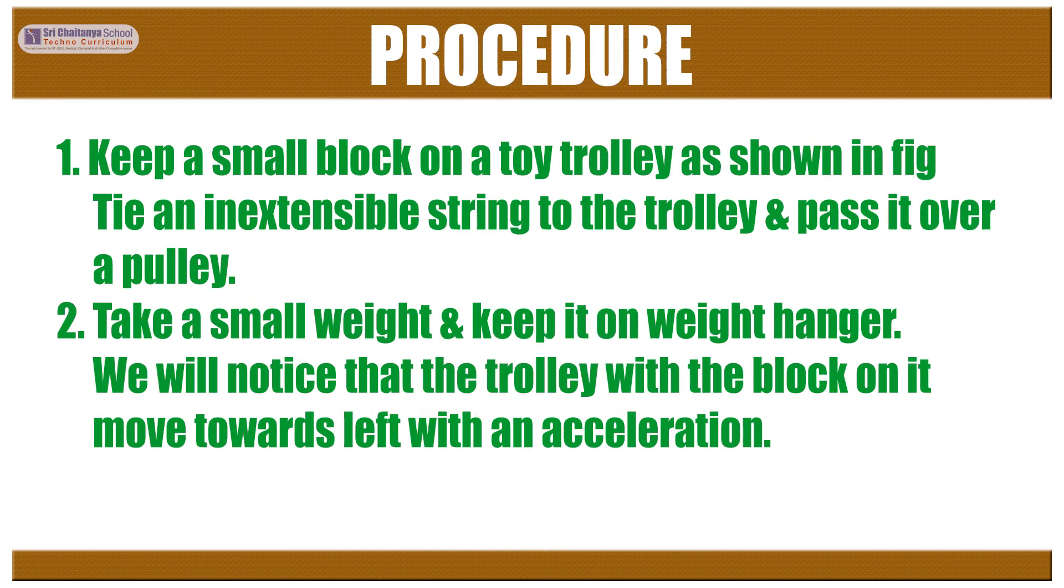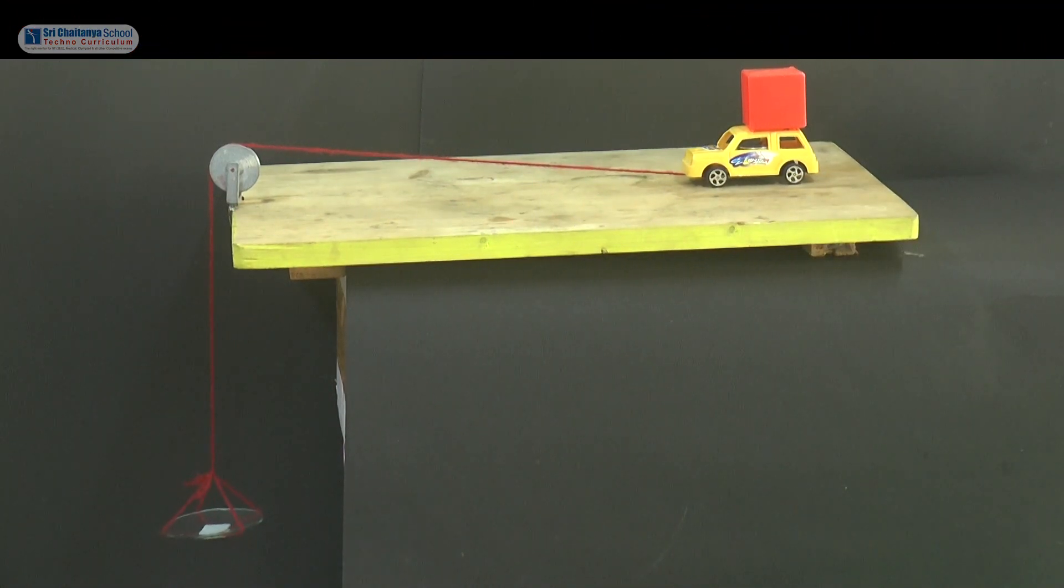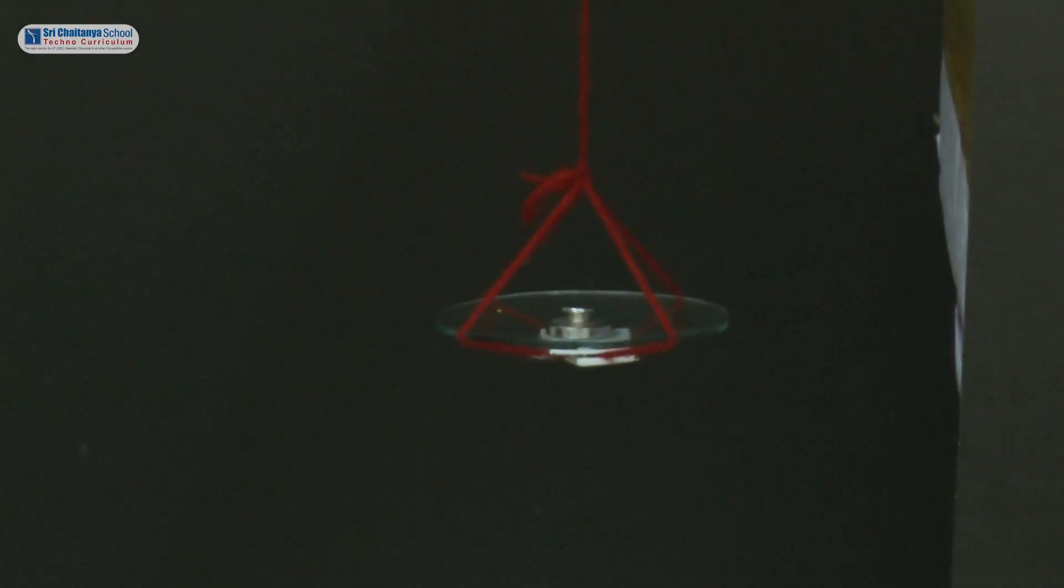Now it is time to see procedure. Keep a small block on a toy trolley as shown in the figure. Tie an inextensible string to the trolley and pass it over a pulley. Take a small weight and keep it on weight hanger.